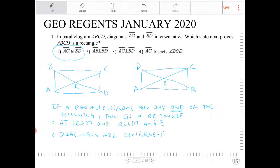And in option four, AC bisects angle BCD. That is also indicative of the quadrilateral being a rhombus as well. That's one of the properties that the diagonals bisect all the angles.